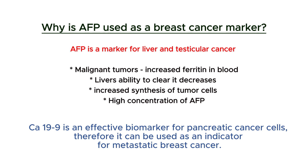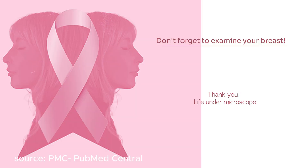CA19-9 is an effective biomarker for pancreatic cancer cells. Therefore, it can be used as an indicator for metastatic breast cancer.